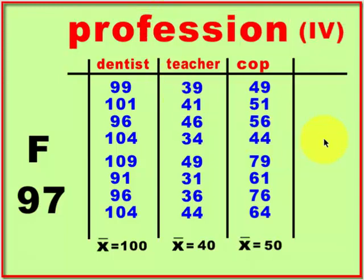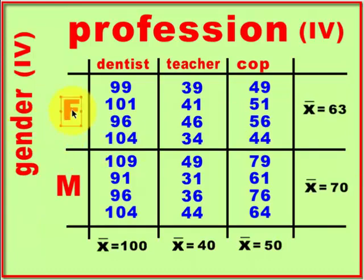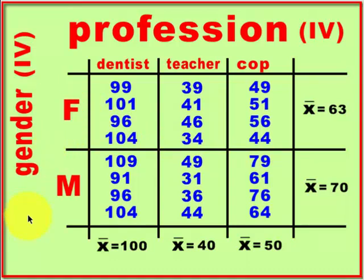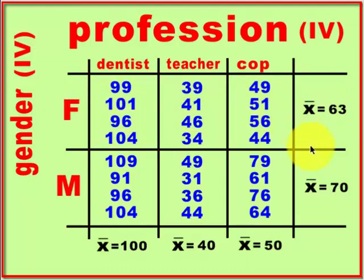Now we're going to add a second IV — gender. This is no longer a one-way ANOVA; it's a two-way ANOVA, also called a factorial ANOVA, which means you have more than one grouping IV. These are what we call marginal means: 63 is the average of all the female salaries lumped together, and 70 is the average for the males.